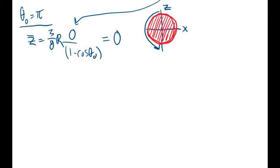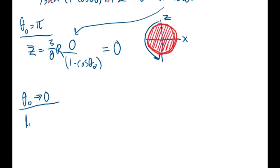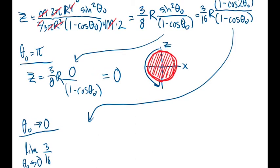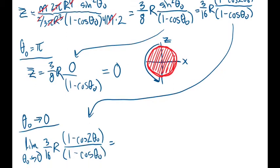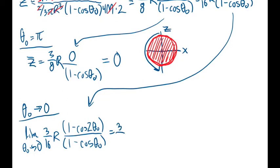The other part asks us to consider theta naught approaching 0. In this case, we'll be taking the limit as theta naught approaches 0 of 3 sixteenths R times 1 minus cosine 2 theta naught over 1 minus cosine theta naught. If theta naught is 0, we'll have a limit of the form 0 over 0, so we'll use L'Hopital's rule. Let's pull out the constants.